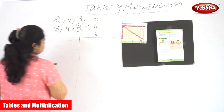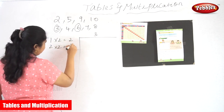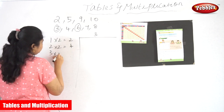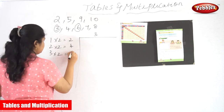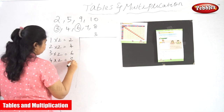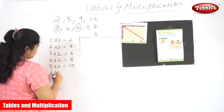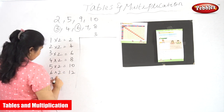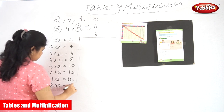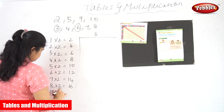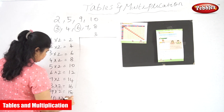So this is for the third table. The second table: 1 into 2 is equal to 2, 2 into 2 is equal to 4, 3 into 2 is equal to 6, 4 into 2 is equal to 8, 5 into 2 is equal to 10, 6 into 2 is equal to 12, 7 into 2 is equal to 14, 8 into 2 is equal to 16, 9 into 2 is equal to 18, 10 into 2 is equal to 20.